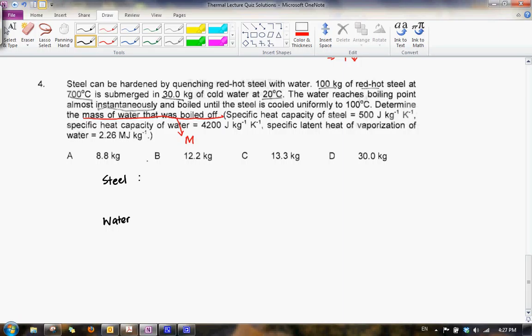For the steel it's quite simple. It starts off as a solid which was at 700 degrees Celsius and it ends up still as a solid which is now at 100 degrees Celsius. Okay. So there was no state change and we know that simply the heat that is given off is given by MC delta theta.